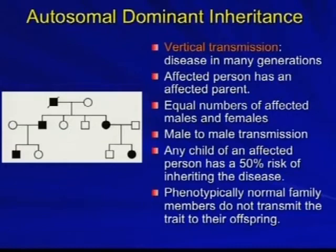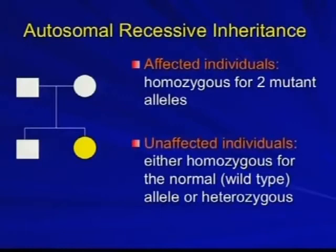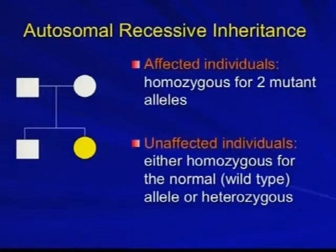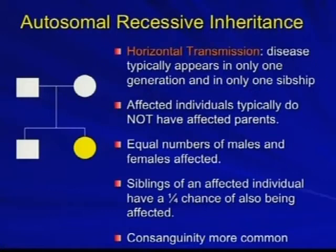Autosomal recessive is a very different inheritance pattern. An individual has to have a mutation on both alleles they've inherited at this locus — one mutation from their father and one from their mother. You typically see similar numbers of affected males and females, and the big thing is that affected individuals are all in one generation — horizontal transmission. You might see affected siblings but not parents or children.